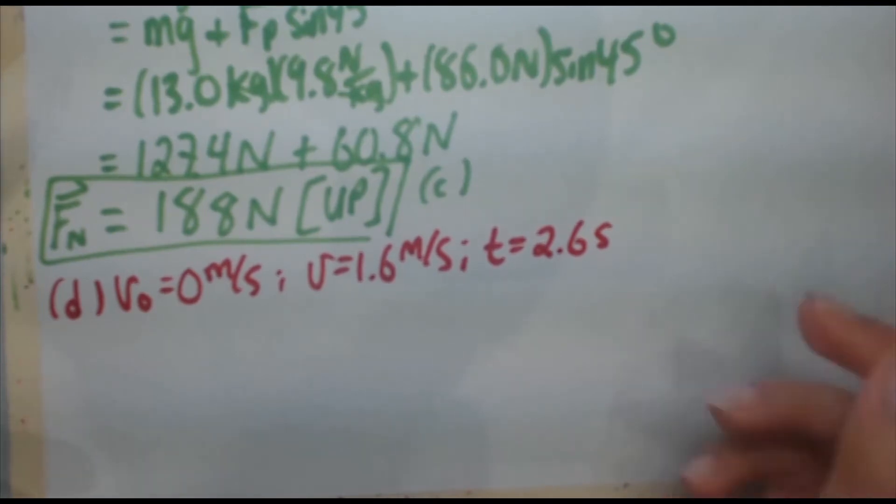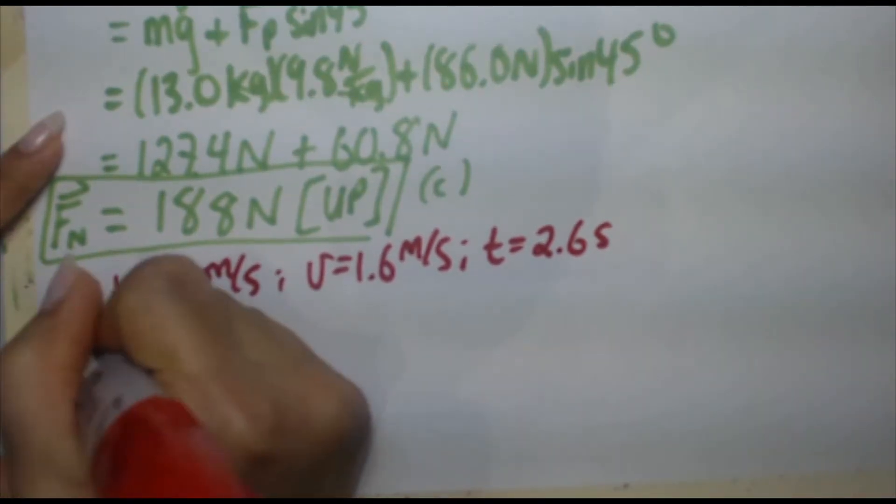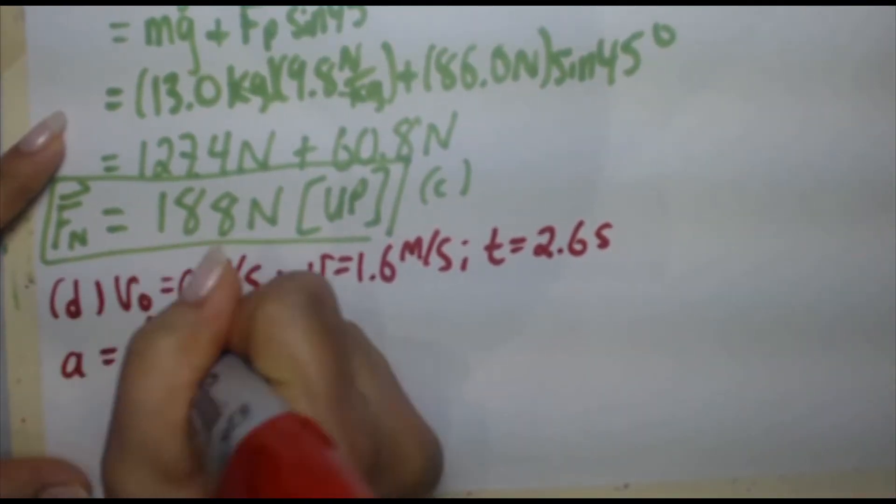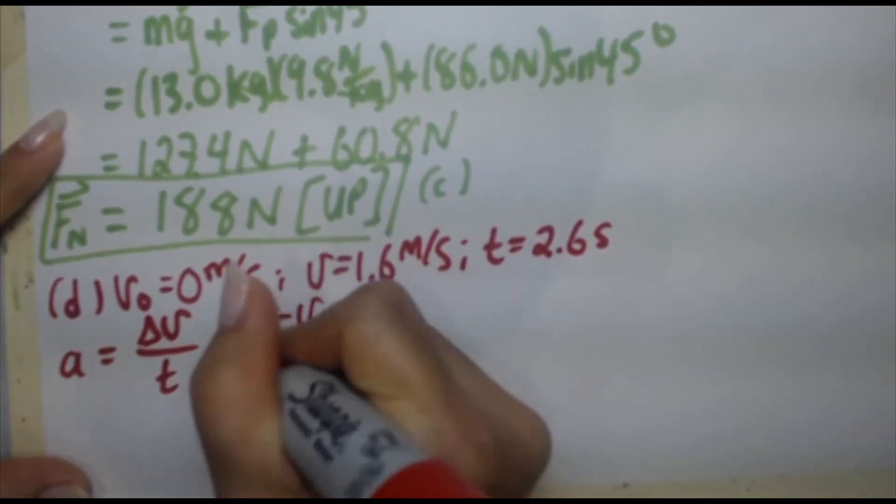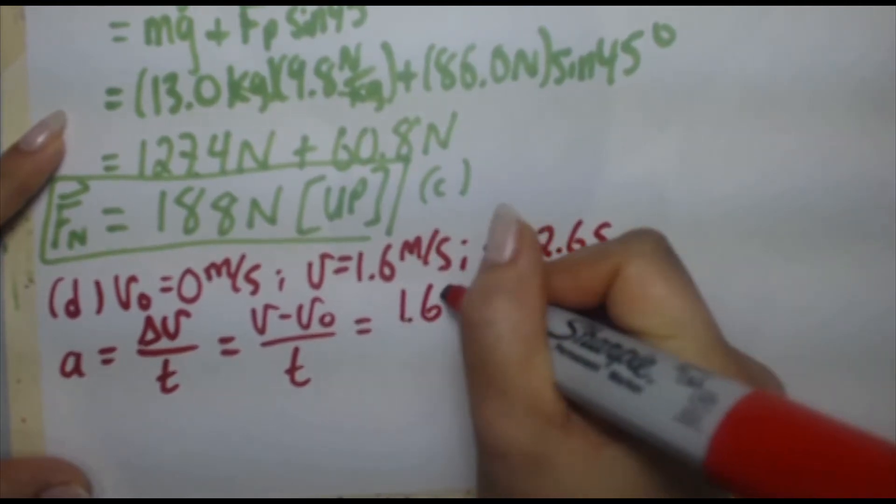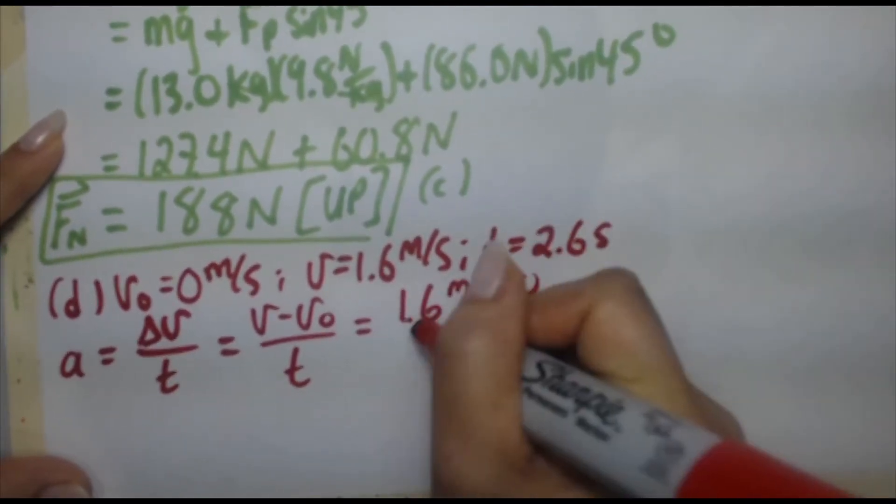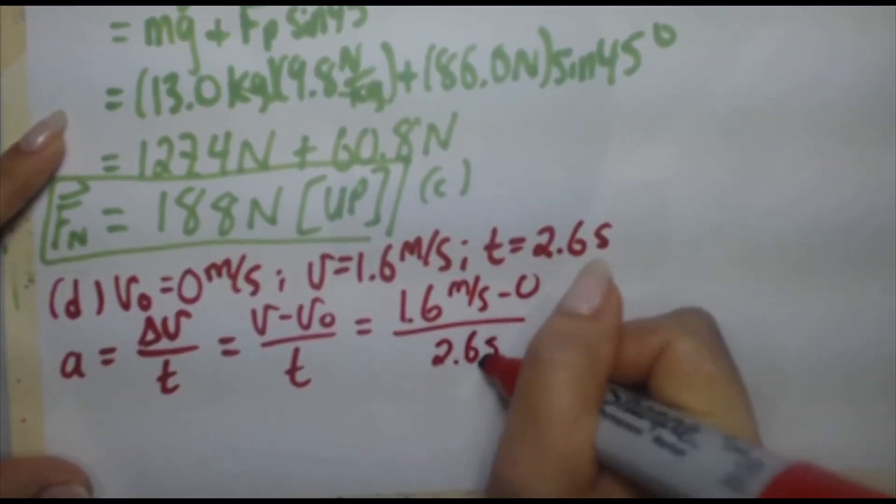So we can find acceleration. And by definition, remember, acceleration is the change in velocity over the time. Delta V is V minus V0 over T. Plug in your numbers. 1.6 meters per second minus zero divided by 2.6 seconds.